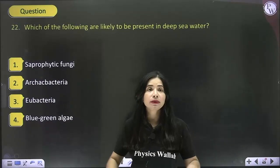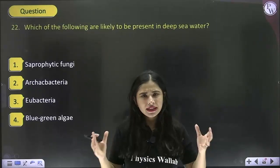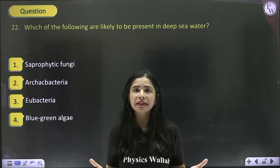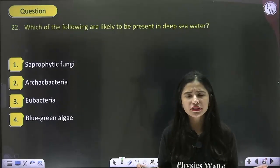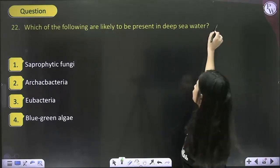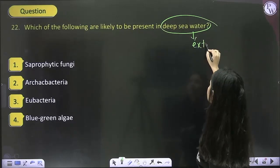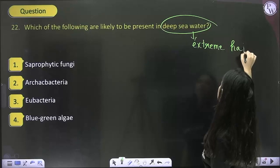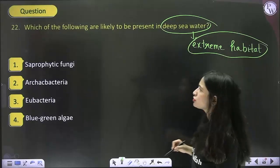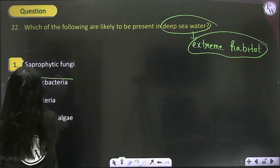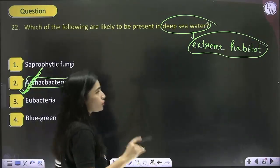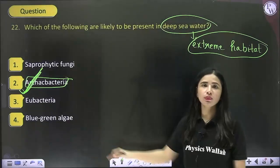Which of the following are likely to be present in deep sea water? Deep sea water means extreme environmental conditions — no light and harsh weather. The answer is RK bacteria, because they are known to survive in extreme environmental conditions. So the answer becomes option 2.